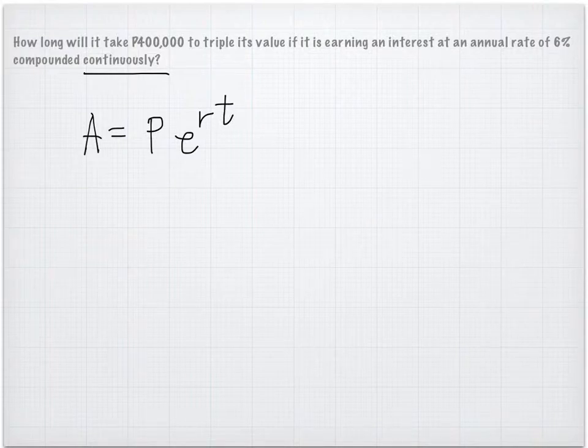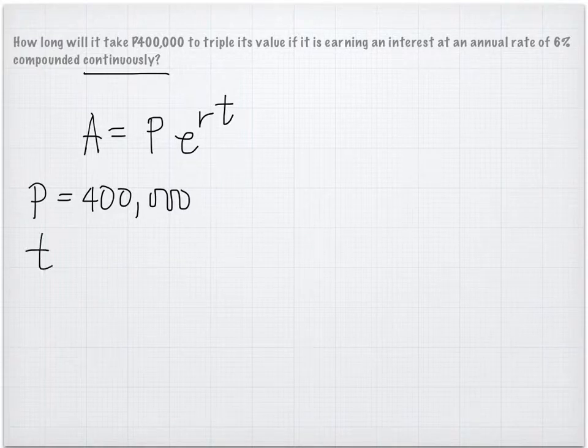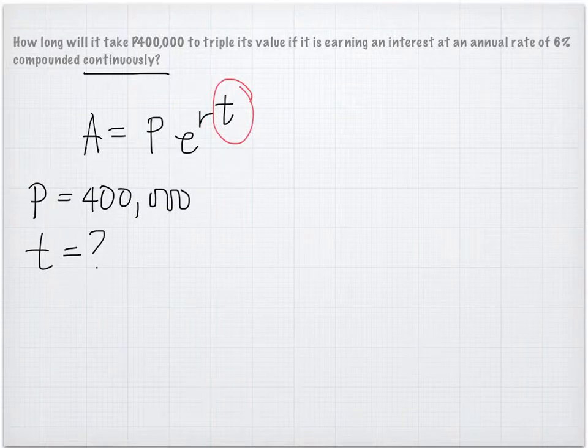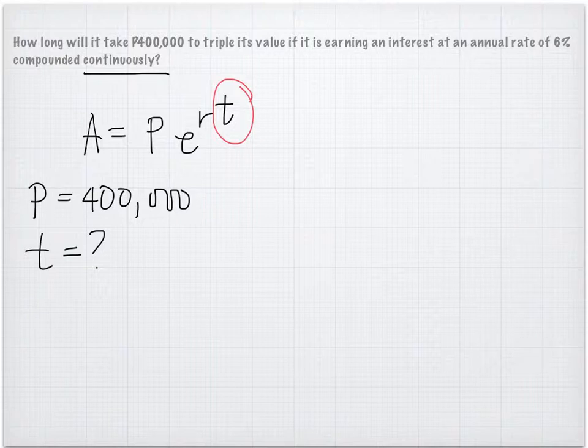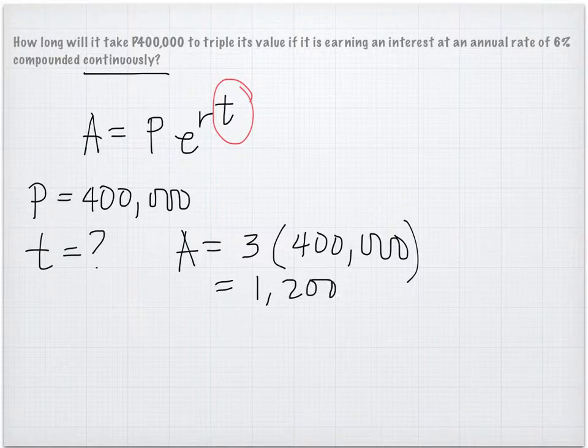We know that the initial amount, P, is equal to 400,000, and we want to find t. So what is the time when the value of P is already times 3? We want to find what is t when A is already 3 times 400,000, or simply 1,200,000.